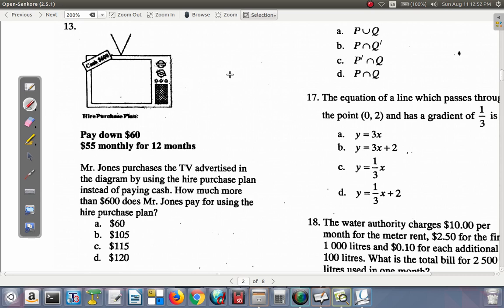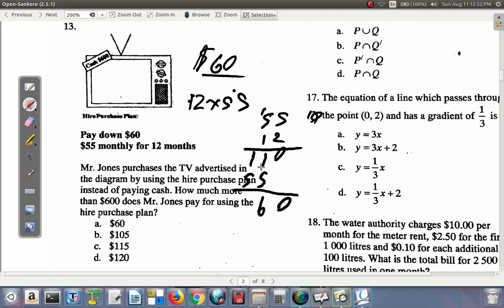Pay down $60, so that's paid down already. Now, $55 monthly for 12 months, that means you will pay $55 then another $55 in month 2, in month 3, $55, 12 times. So we have 12 times 55. Let's multiply that out. 55 by 12. 2 times 5 is 10, bring down the 0, carry 1. 2 times 5 is 10 and 1 is 11. 1 times 5 is 5, 1 times 5 is 5. So $660.